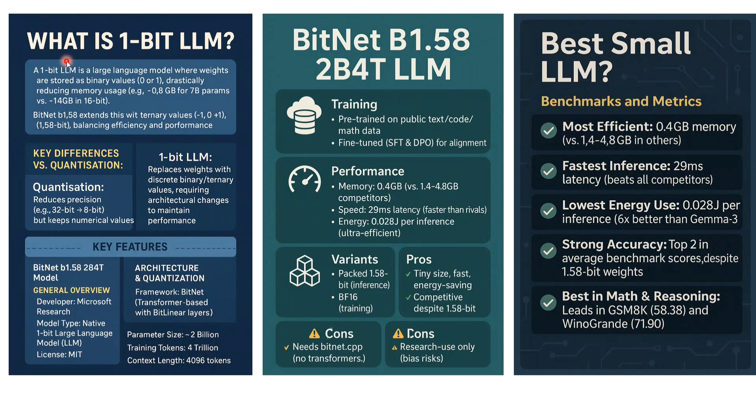For example, if you have 7 billion parameters, the total number of bits used is just 7 billion — that's it. So the compression is very high and these models are very small. Now in the case of BitNet b1.58, they use ternary values: minus one, zero, or plus one. So it is not a true 1-bit LLM, but it is the closest 1-bit LLM we have right now.